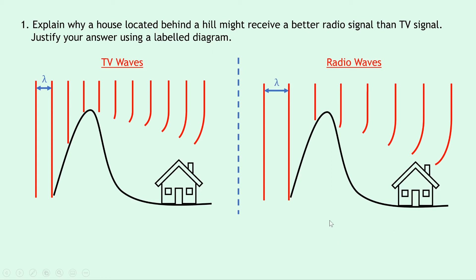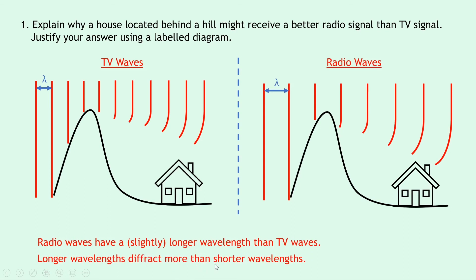The last thing to do now that we have our diagram is just to do our explanation. So the first thing we can say is that radio waves have a slightly longer wavelength than TV waves and this is because longer wavelengths diffract more than shorter wavelengths. So we've shown that and justified it with our labelled diagram there.